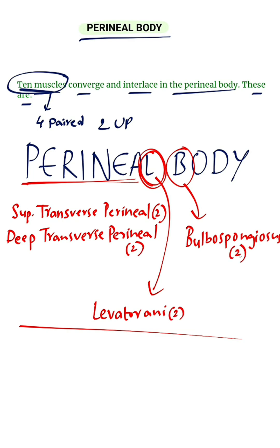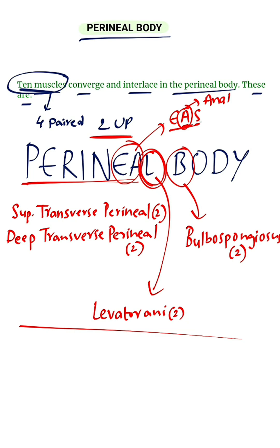And the two unpaired muscles — remember 'EA'. The first unpaired muscle is External anal sphincter. The second unpaired muscle is the Longitudinal muscle coat of anal canal.